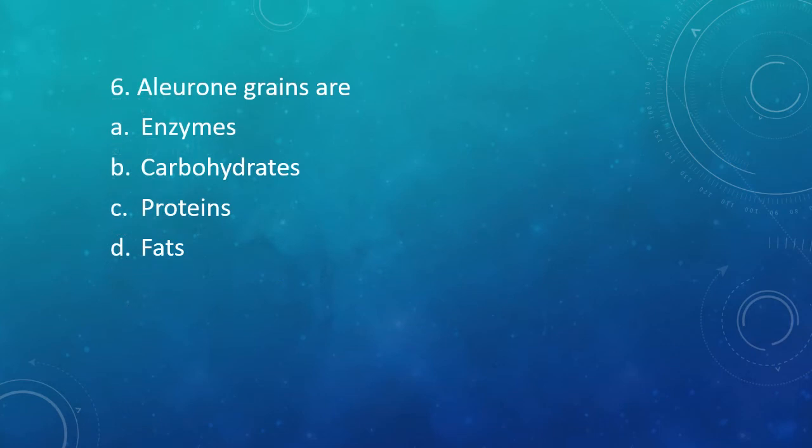Question 6: Aleurone grains are — Option A: Enzymes. Option B: Carbohydrates. Option C: Proteins. Option D: Fat. The correct answer is Option C, that is Proteins.